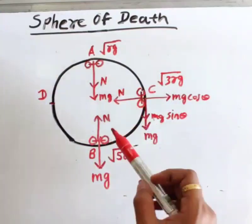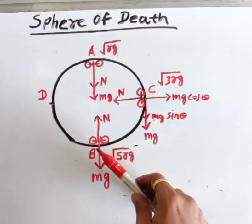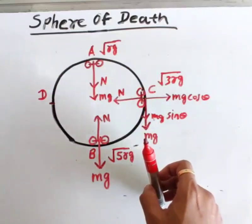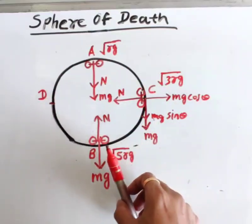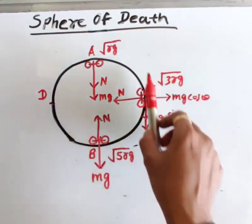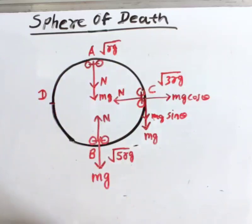If the motorcyclist maintains these speeds throughout the Sphere of Death, he is able to perform the complete vertical circular motion successfully.